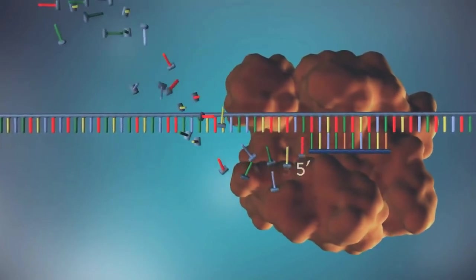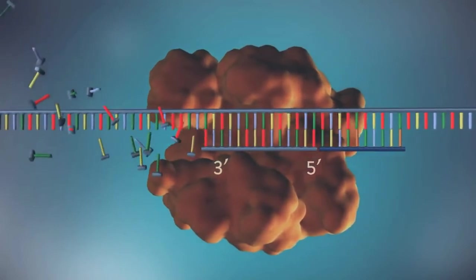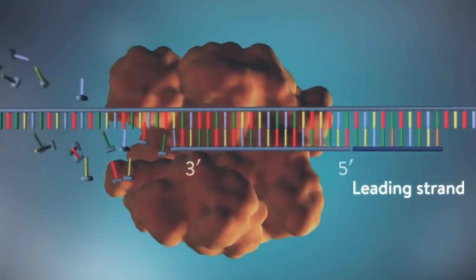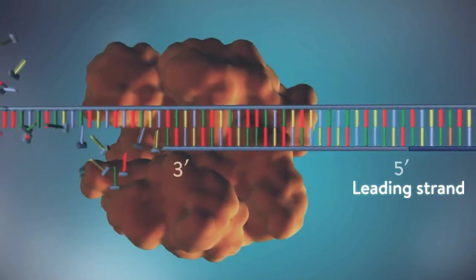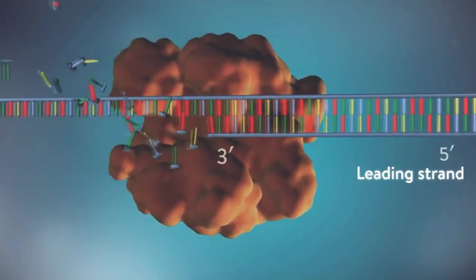One of the new strands of DNA, the leading strand, is made continuously. The DNA polymerase adding bases one by one in the five prime to three prime direction.